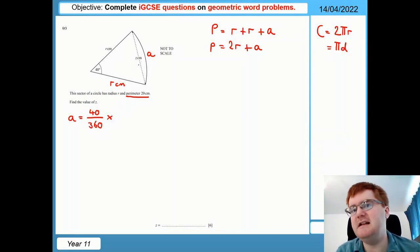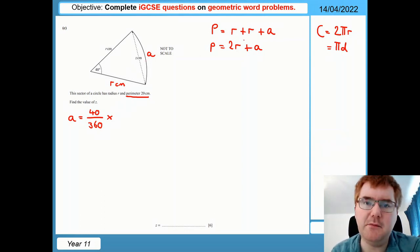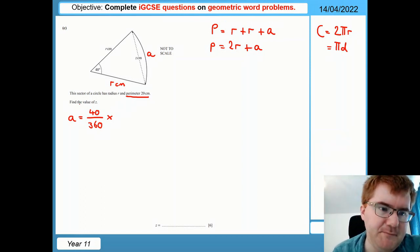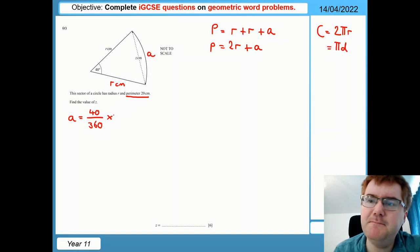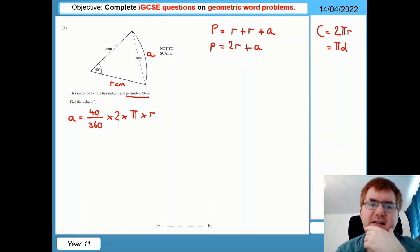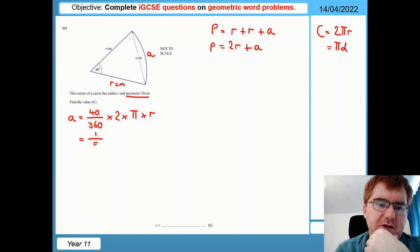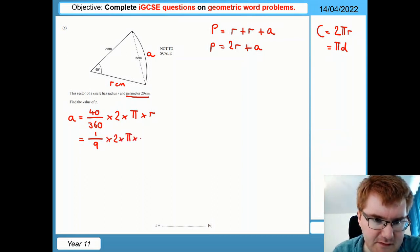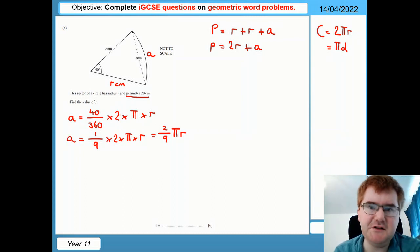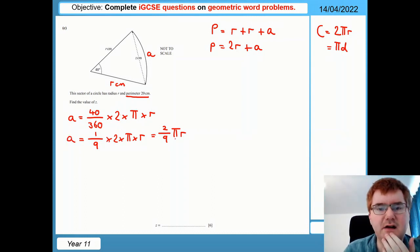So notice, even though we're looking for Z right at the end, it is a 6 mark question. We're just going to take it one step at a time. Let's work out the arc. Let's see how we can use that with the perimeter that we know. So the arc is equal to 40 over 360 times 2 times pi times R. Now we can simplify this down slightly here. So 40 divided by 360, that is equal to 1 over 9. How many 40s fit into 360? Well, that's going to be 9 times 2 times pi times R. And if you simplify this further, 1 ninth times 2 is just 2 ninths. We get 2 ninths pi R.